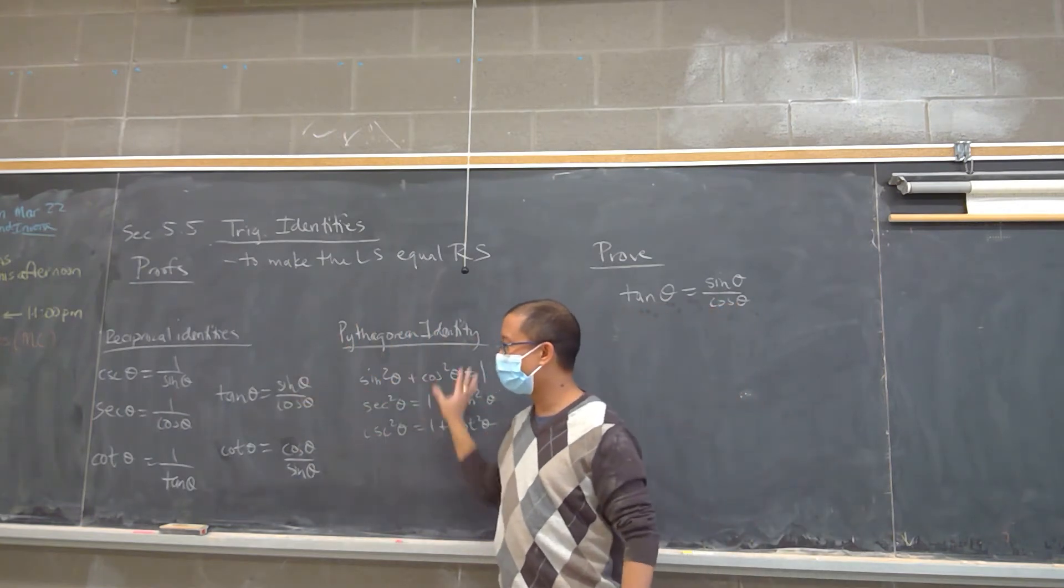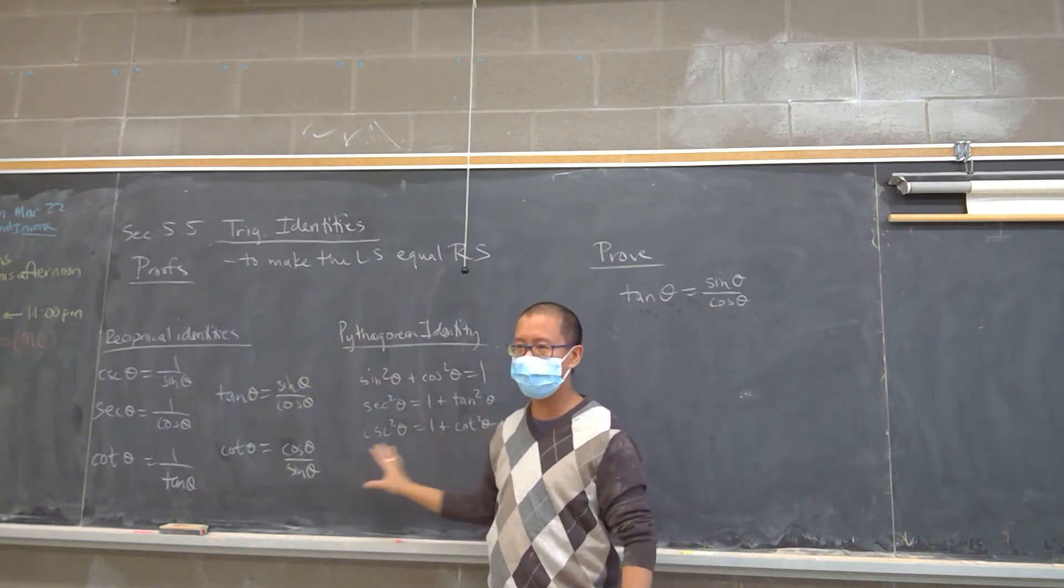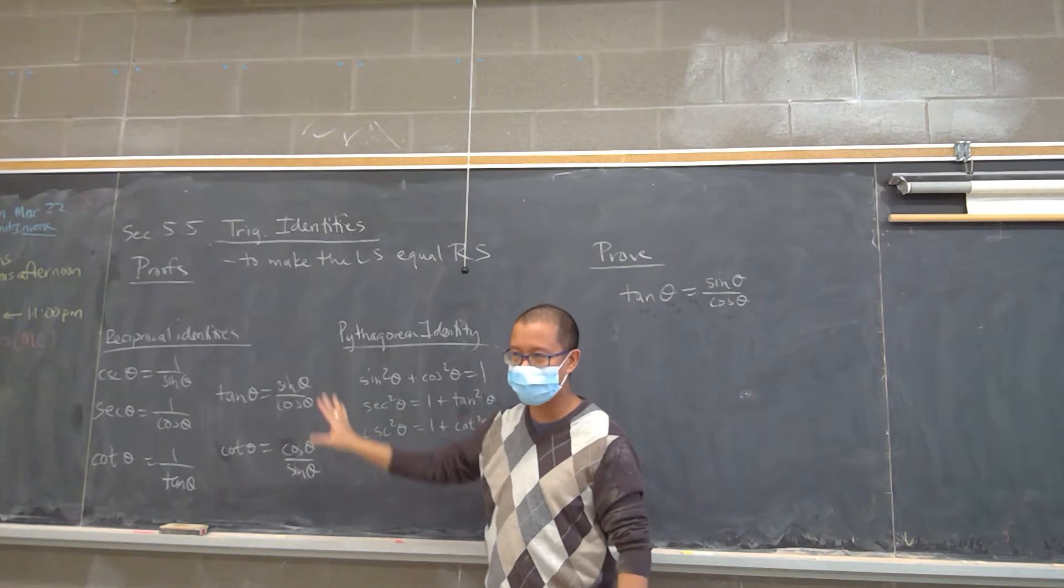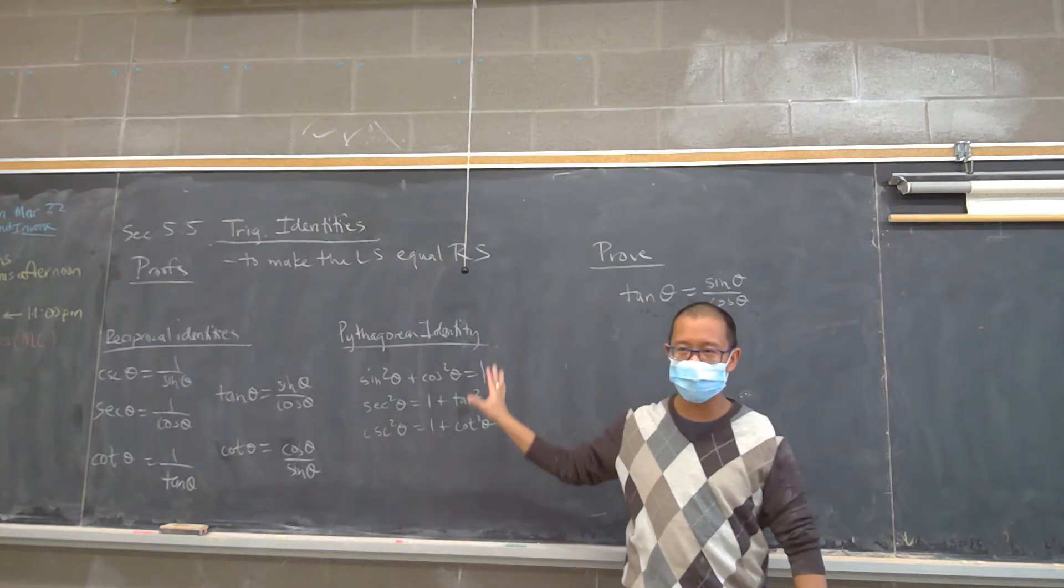At your repertoire or your toolset, you actually have these trig identities. All of these are at your disposal. Does that mean you always have to use them?